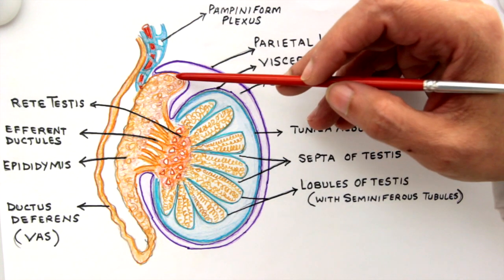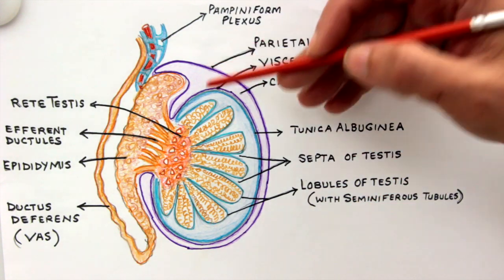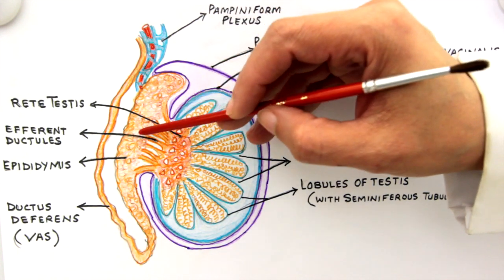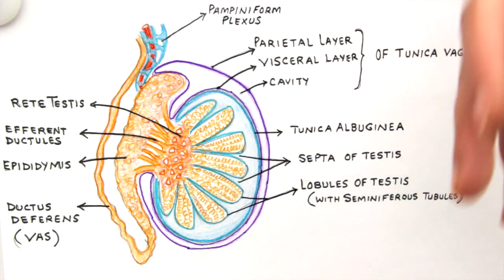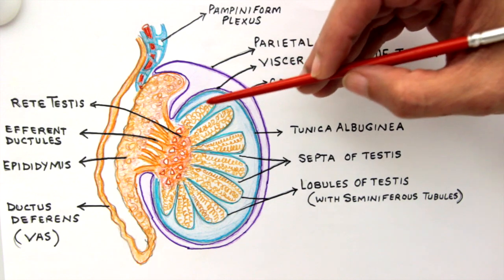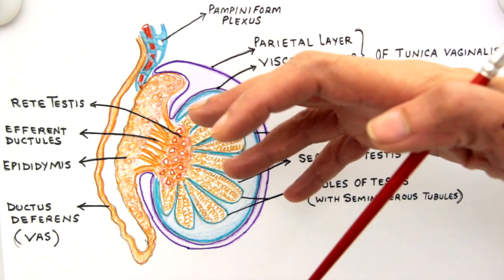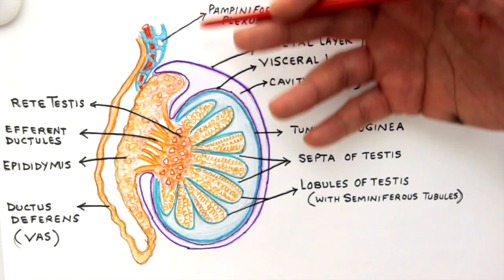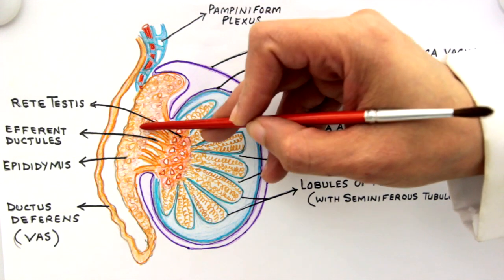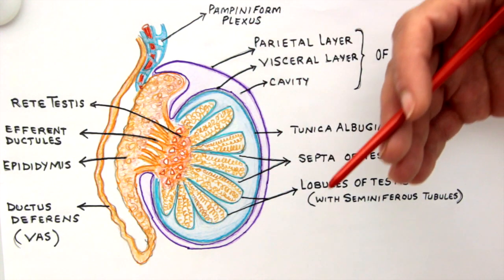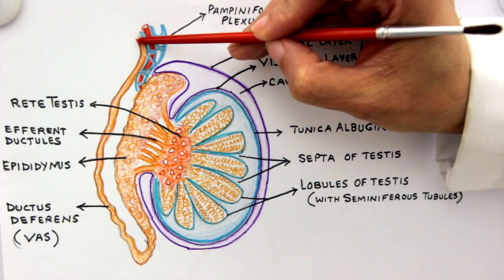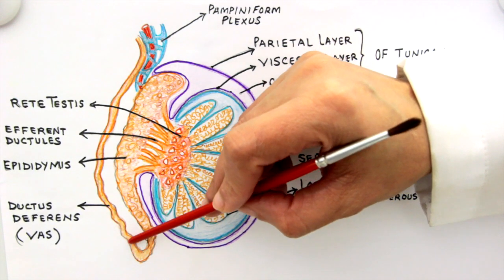The epididymis is the storage house for spermatozoa that are not yet mature. They get stored in the epididymis and the cells there help them mature. Spermatozoa are not capable of movement initially — they are not motile — whereas a sperm is a highly motile cell. Motility is acquired here in the epididymis. So the epididymis is both the storage center and the maturation center for sperms.